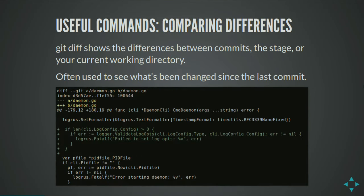Another great command is git diff. Every time before I'm making a commit, I just want to check to make sure I've only changed what I want to change. Git diff shows the differences between commits, between the stage, or your current working directory, or different branches.